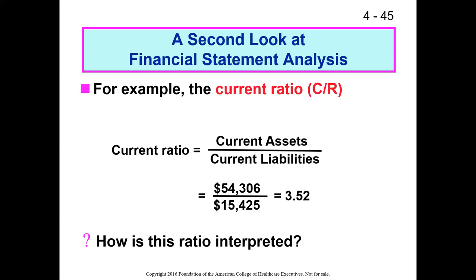We typically always want the current ratio to be greater than one, but how big it should be depends on a comparison population. Whether 3.5 is good depends on what similar organizations are carrying. You also don't want too high a current ratio because that means you're carrying too many current assets that could instead be invested into long-term investments to earn higher returns, paid out to investors if you're for-profit, or used to buy additional real assets like equipment to better fulfill your mission.